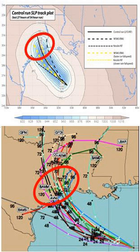Cloud microphysics are the physical processes that describe the growth, decay, and fallout of precipitation particles. In terms of models, cloud microphysics occur on a scale smaller than the grid scale of the model and have to be parameterized.